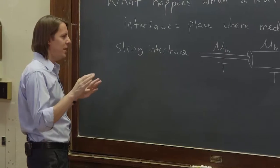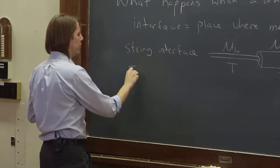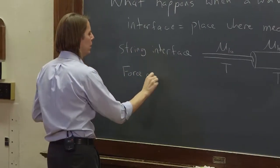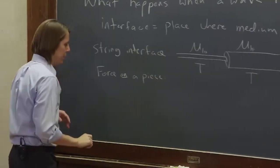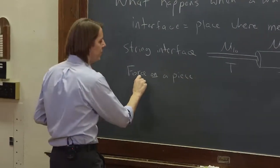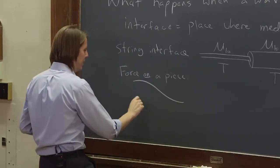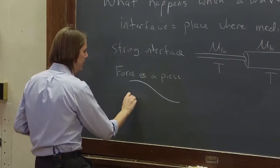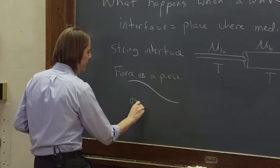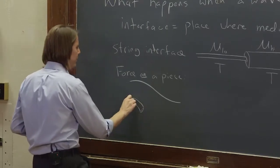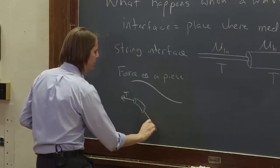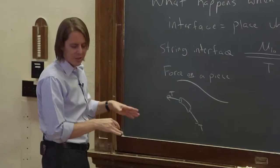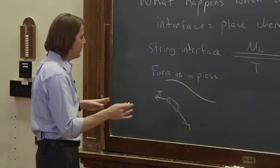To derive the wave equation, we thought about the force on a piece of string. We had the wave equation, we had the string doing its thing here, and we zoomed in on a curved piece of the string. We said it has a tension this way and a tension that way, and from the differences in those tensions, that's where we got the wave equation.